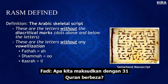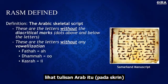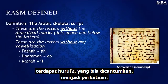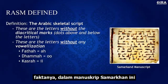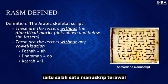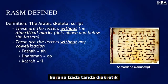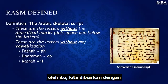To understand what we're talking about, we need to define the rasm — the skeletal consonantal script. If you look at the Arabic script itself, there are letters you put together to form words, and that's what we call the structure, or rasm. In early manuscripts, like the Samarkand manuscript, something is missing. As someone who reads Arabic, it will take many guesses to understand what it means, because the diacritical markings and dottings are missing to identify pronunciation and vowel markings.